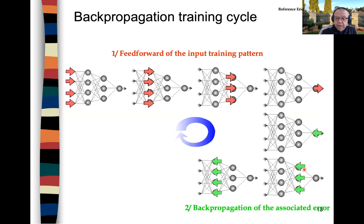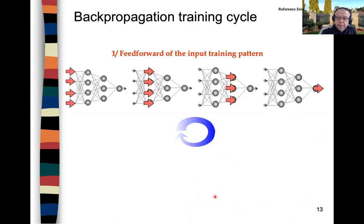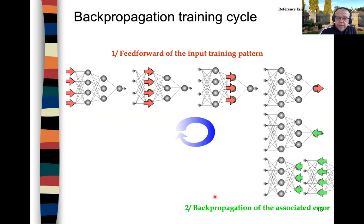You calculate that delta and feed it back to the second hidden layer, and then the error is also fed back to the first hidden layer.